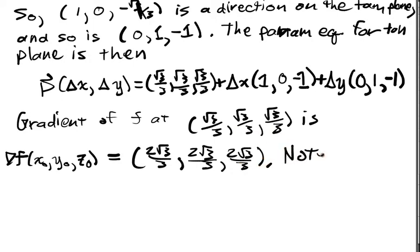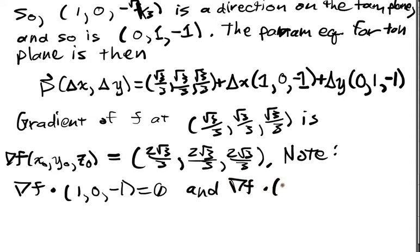Note. If I dot this thing with (1, 0, -1), I get 0. And if I dot this thing, the gradient, with the other direction on my tangent plane, I also get 0. I'm going to add 2√3/3, and I'm going to subtract 2√3/3. Same thing here.